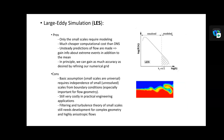For LES pros: only small scales require modeling, computational cost is much cheaper than DNS, unsteady predictions of flow are made, and in principle you can gain as much accuracy as desired by refining the numerical grid. Cons: small-scale assumptions require independence from boundary conditions — especially important for flow geometry — and it is still very costly in practical engineering applications.